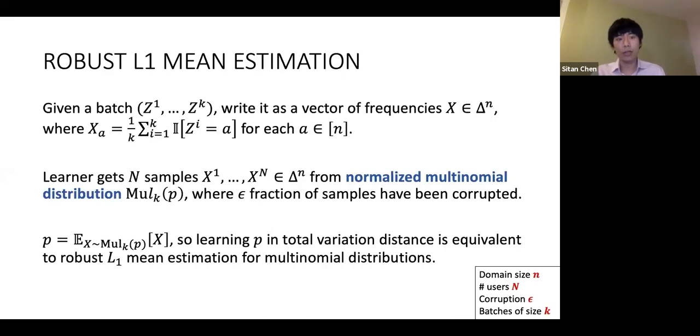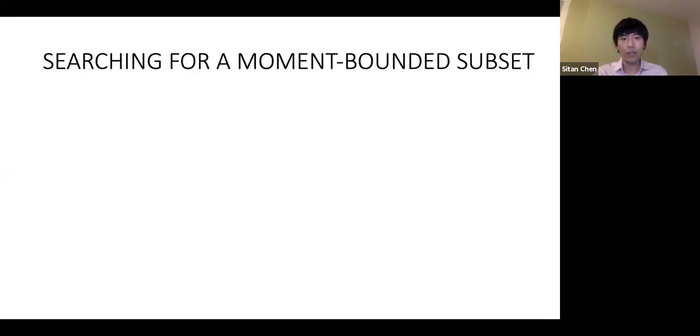How do we show these results for robust mean estimation? The general recipe for robust mean estimation is the following: I would like to find a subset of my data which satisfies certain structural properties that the clean subset would satisfy. The uncorrupted points perhaps satisfy some empirical moment bound. I would like the subset that I select to satisfy the same kind of moment bounds.